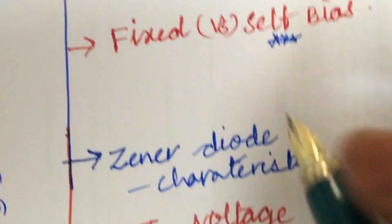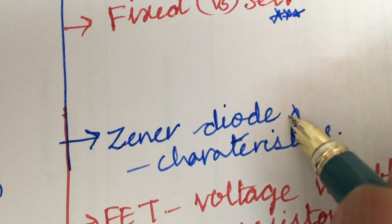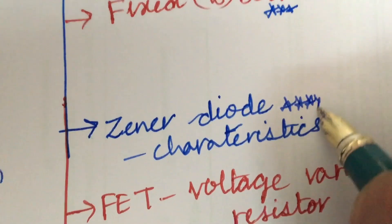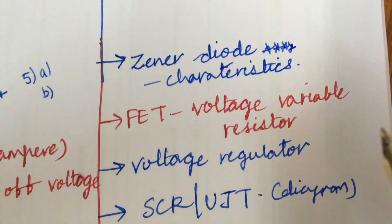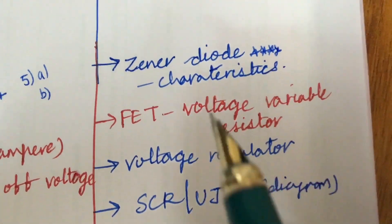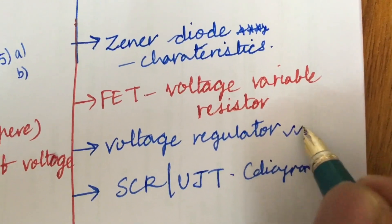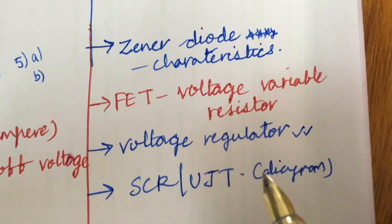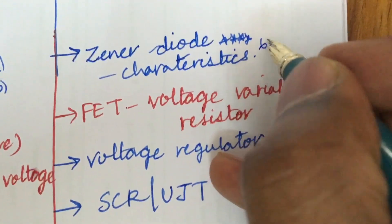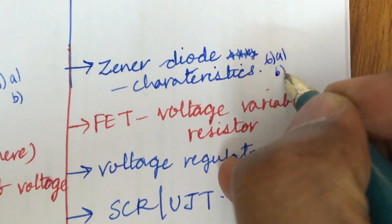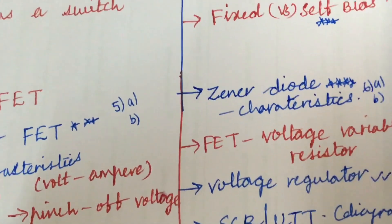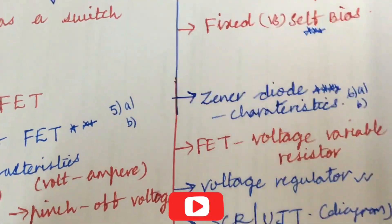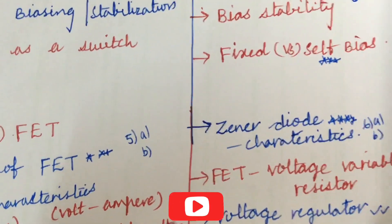Later, the Zener diode and its characteristics is said to be very important and gunshot question. And FET as voltage variable resistor and voltage regulator is said to be a B question. And SCR or UJT and its diagrams and the problems related to these concepts will be the 6A as well as 6B, dear students. I have taken into consideration 7 questions of which the question paper is of 8.